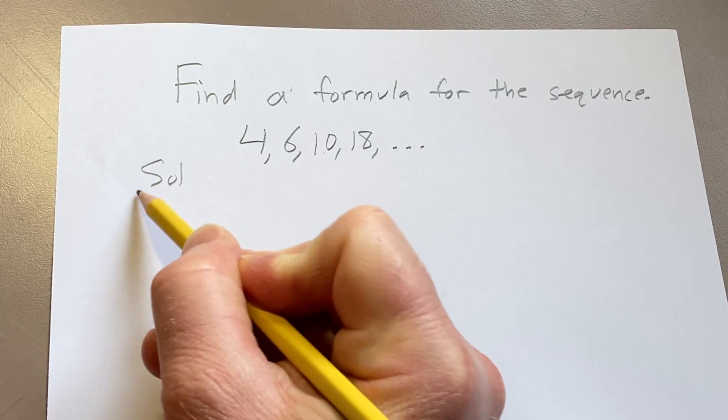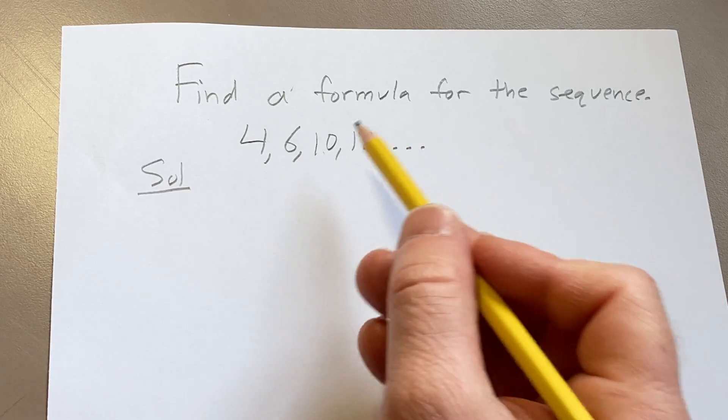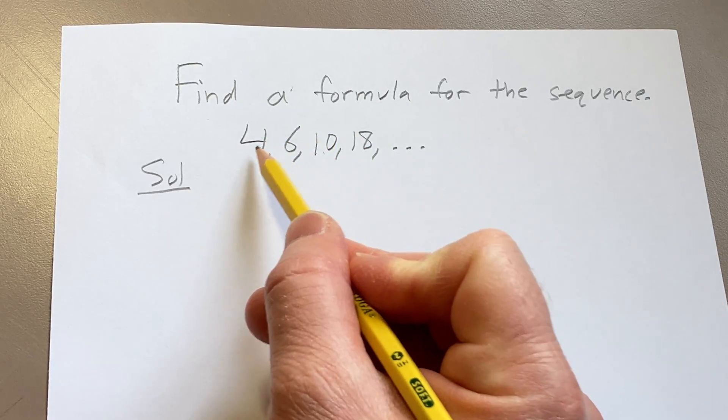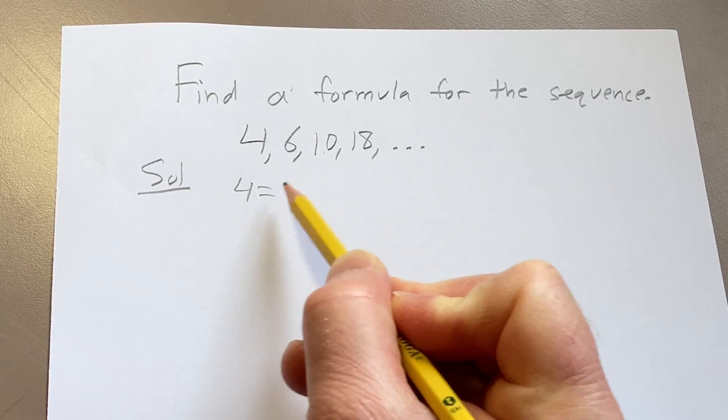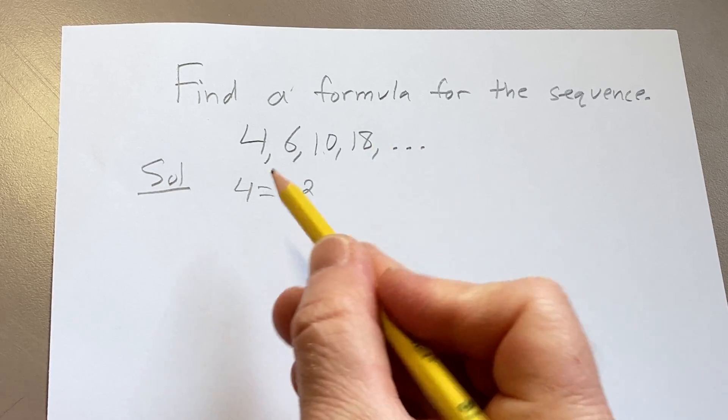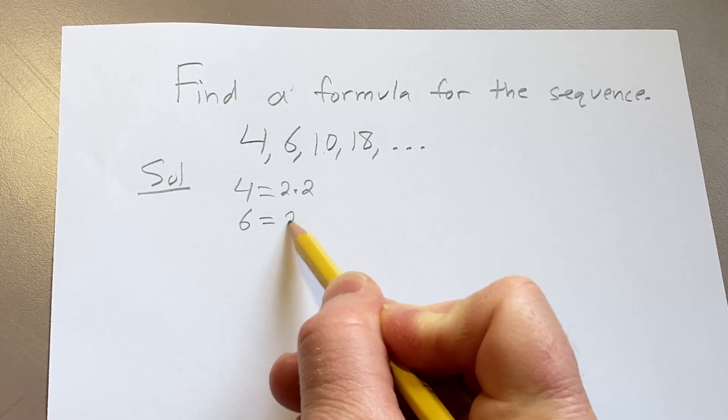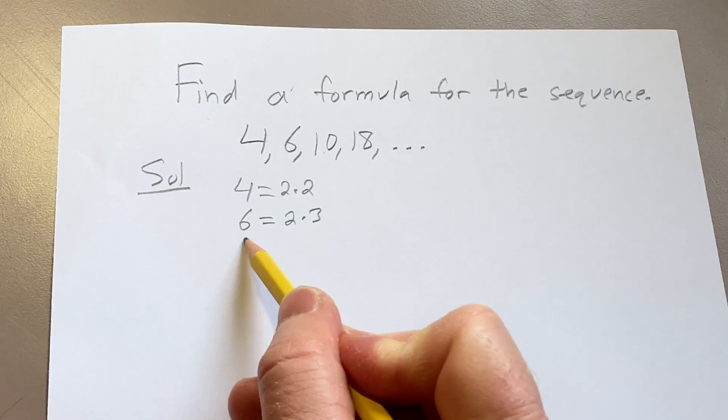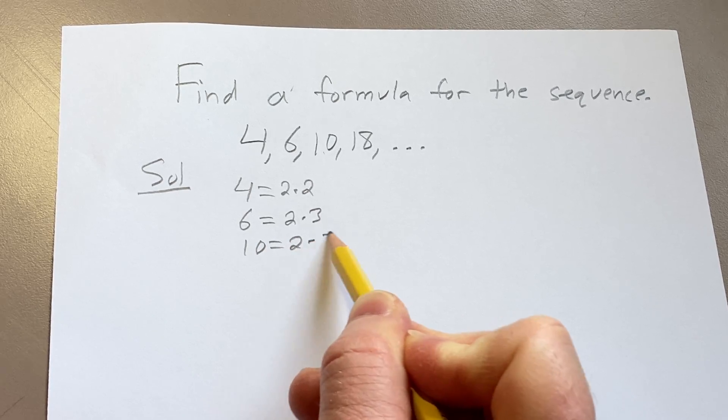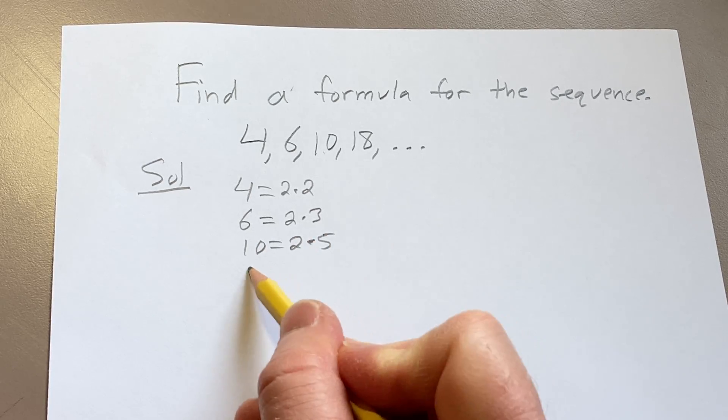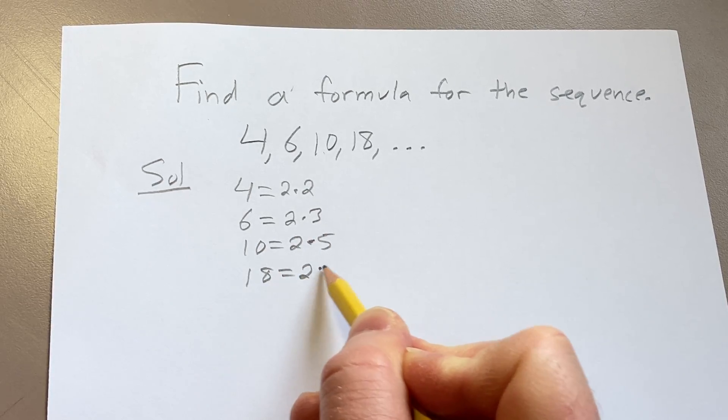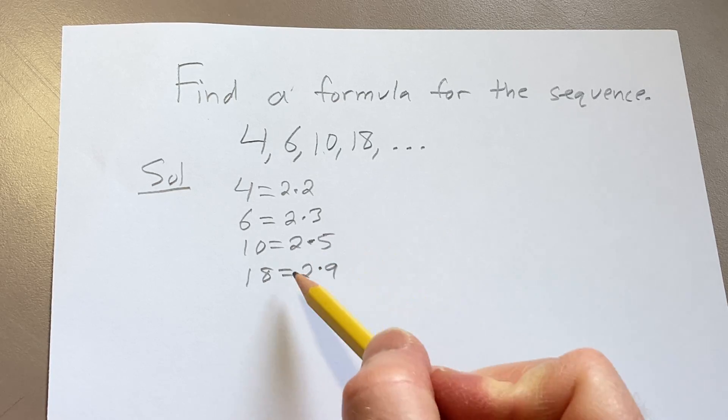Solution. So my first approach to this problem was to notice that 4 is 2 times 2, and then 6 is 2 times 3, and then 10 is 2 times 5, and then 18 is 2 times 9. So those are things that are pretty easy to see.